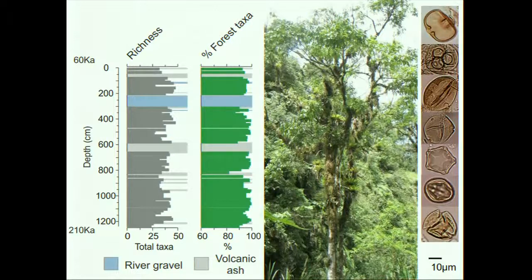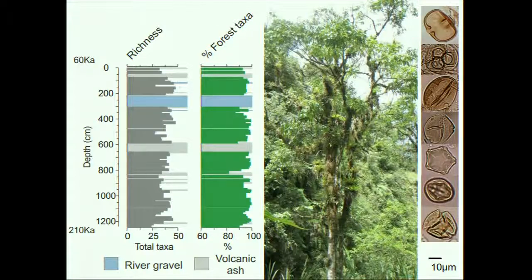In order to look at this, I need to examine the total percentage of forest taxa present in my samples. On the screen here we have two graphs: the percentage of forest taxa, represented by the green graph, and the total richness, represented by the grey graph.